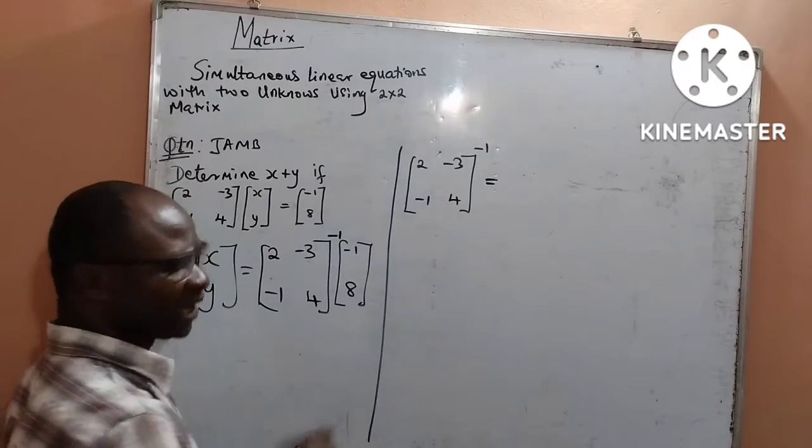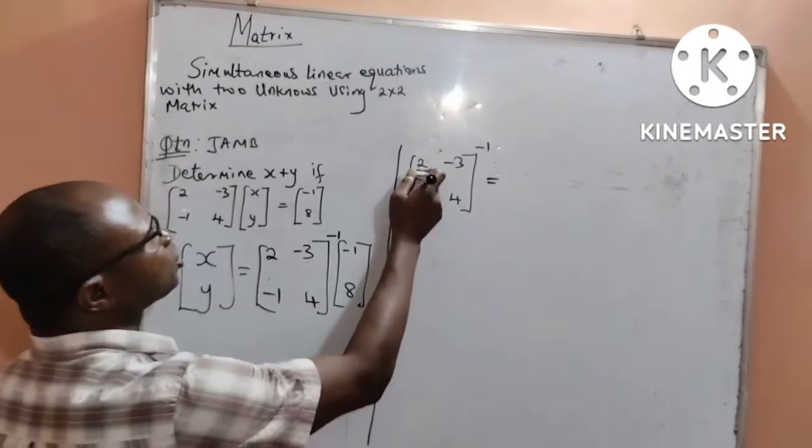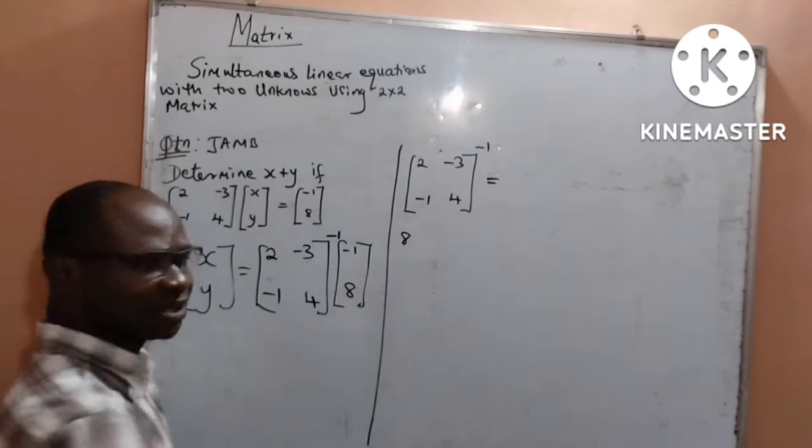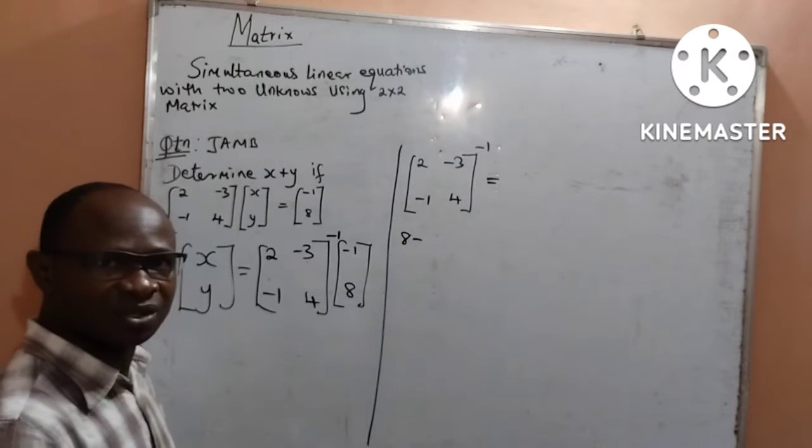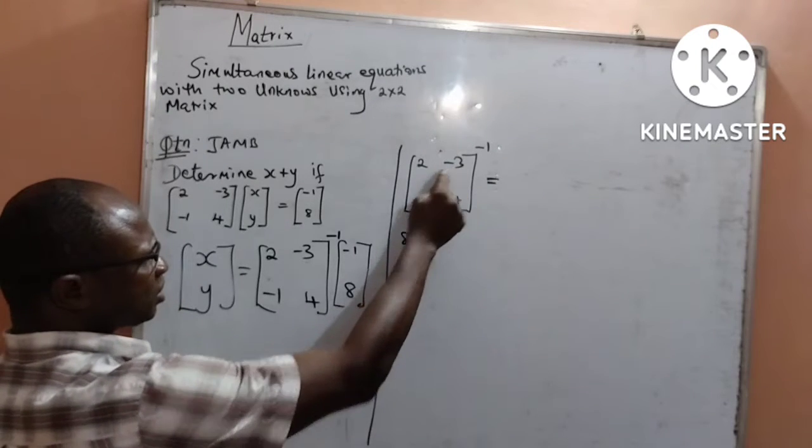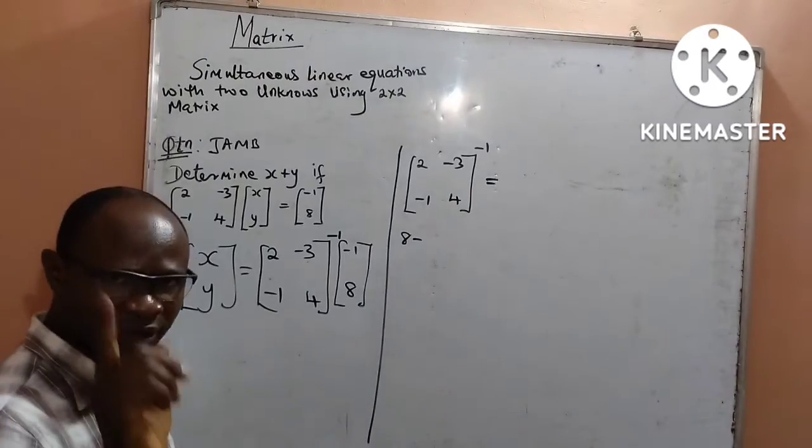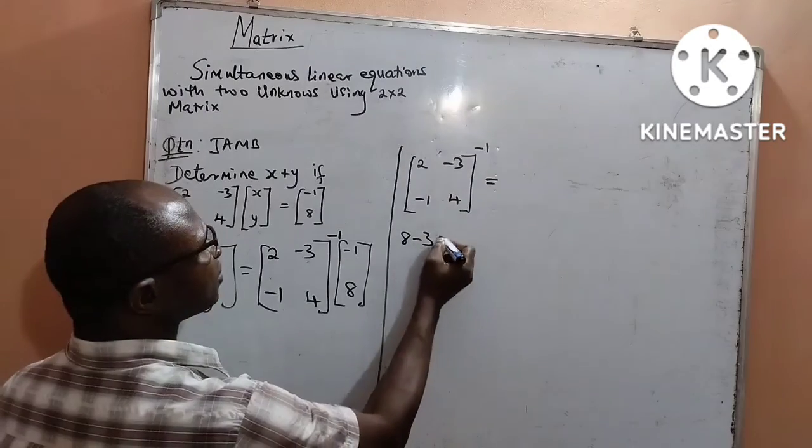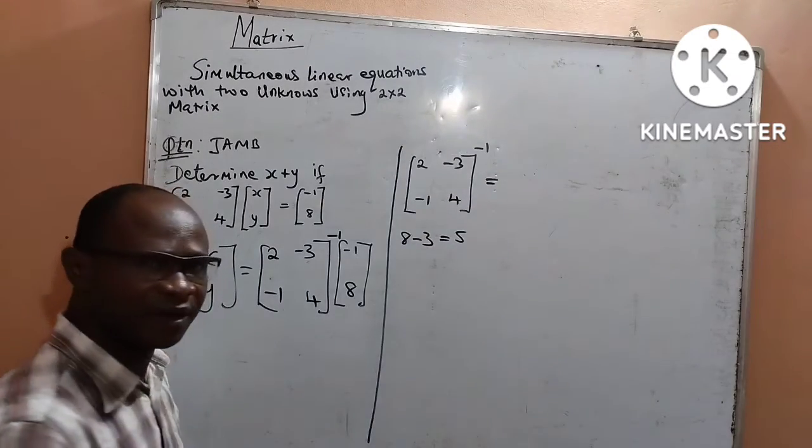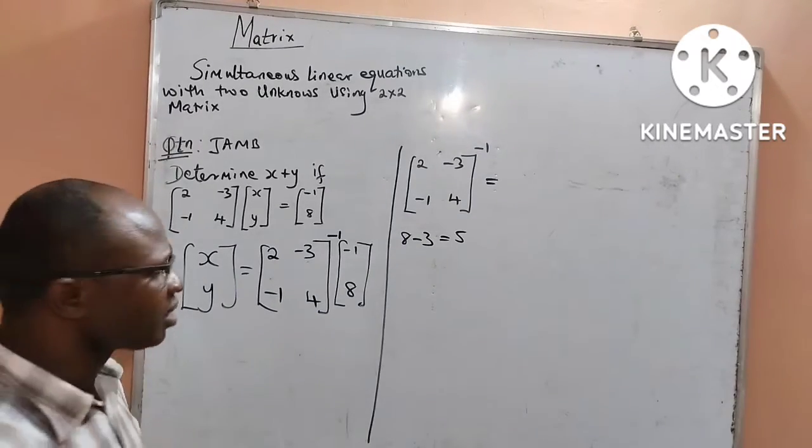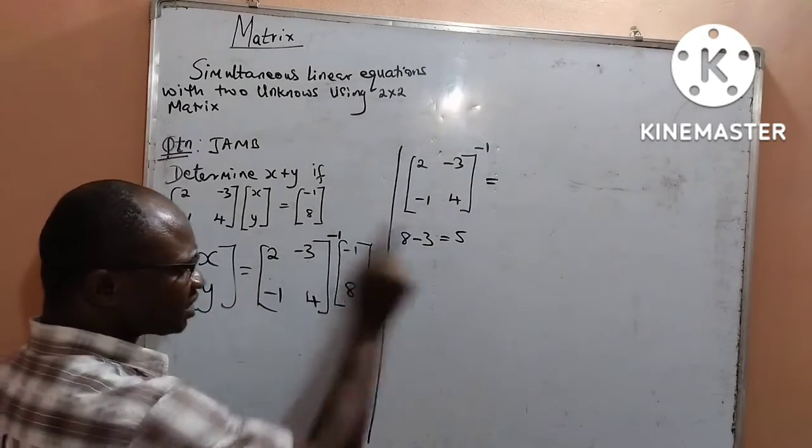How to get the determinant? 2 times 4 will give me 8. Minus, minus 3 times minus 1 will give me 3. I will subtract it and that is 5. Meaning that my determinant is 5.